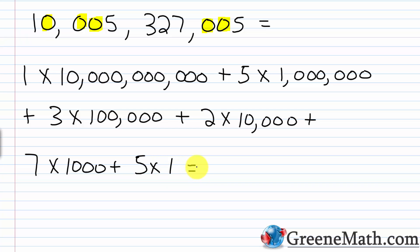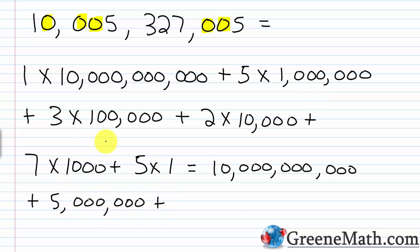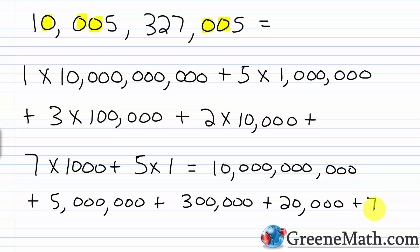Let's do a little multiplication. 1 times 10 billion is just 10 billion. Plus 5 times 1,000,000 is 5,000,000. Plus 3 times 100,000 is 300,000. Plus 2 times 10,000 is 20,000. Plus 7 times 1,000 is 7,000. Then plus 5 times 1, which is 5. All we're doing is breaking the number down to see the value for each digit: this 1 is 10 billion, this 5 is 5 million, this 3 is 300,000, this 2 is 20,000, this 7 is 7,000, and the last 5 is just 5 because it's in the ones place.